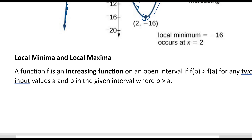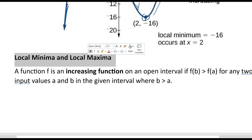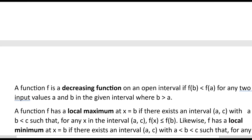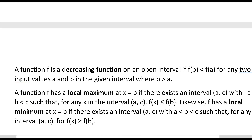A function F is an increasing function on an open interval if F(B) is greater than F(A) for any two input values A and B where B is bigger than A — so as you go to the right, it goes up. A decreasing function is when F(B) is less than F(A) for B bigger than A — so as you go to the right, it goes down.